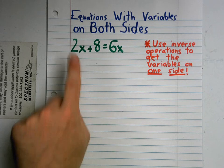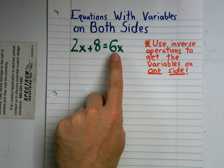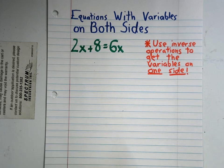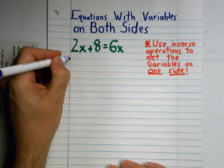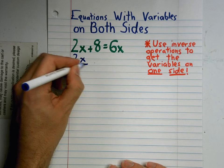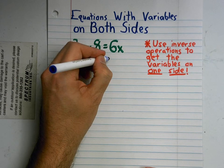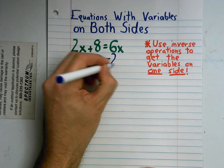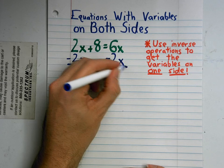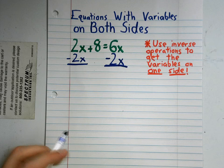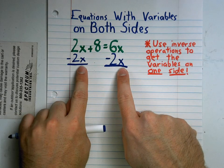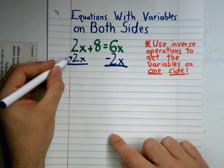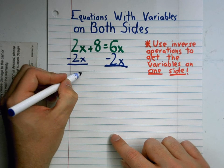So in this case, if we have 2x plus 8 equals 6x, since I have a positive 2x on this side, I'm going to subtract 2x from it. And since I subtract 2x from one side, I'm going to subtract 2x from the other. Remember, we call this combining like terms because these terms both have x's. So 2x minus 2x, that's just 0.